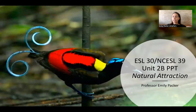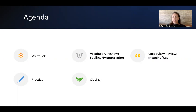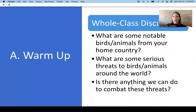This is going to be a short video, about 20 to 30 minutes, on Unit 2b. We are still within Unit 2, so we're focusing on natural attraction. For this PowerPoint we're going to do a little warm-up, focus on the pronunciation of our new vocabulary words — although the pronunciation recording for this unit is up on Canvas under modules, week five — talk about the meaning and use of the vocabulary words, do a little bit of practice, and then we are going to close this class.